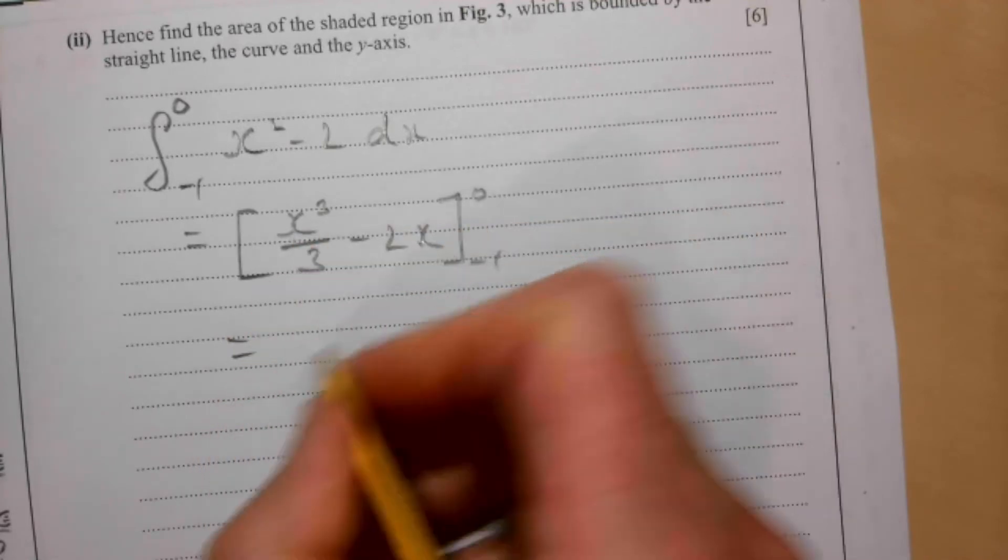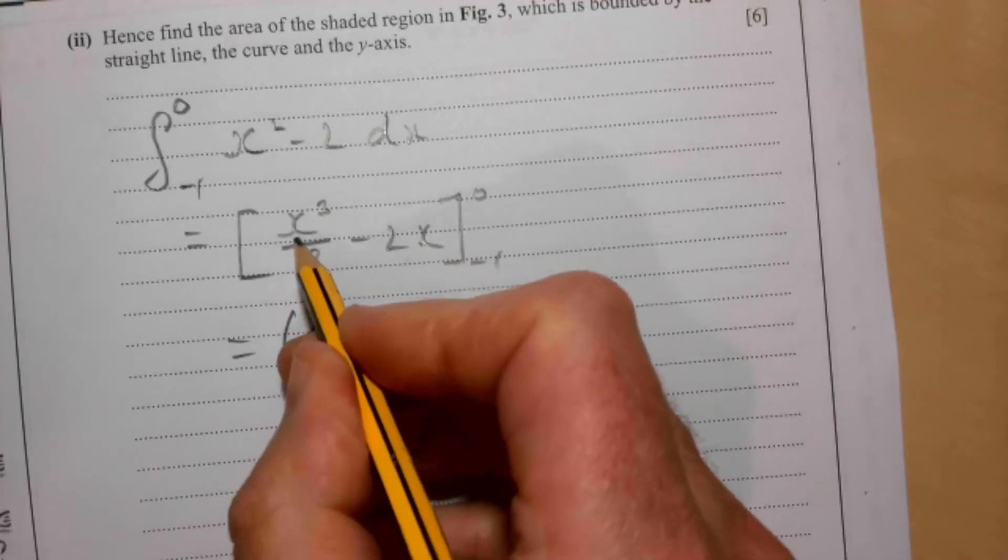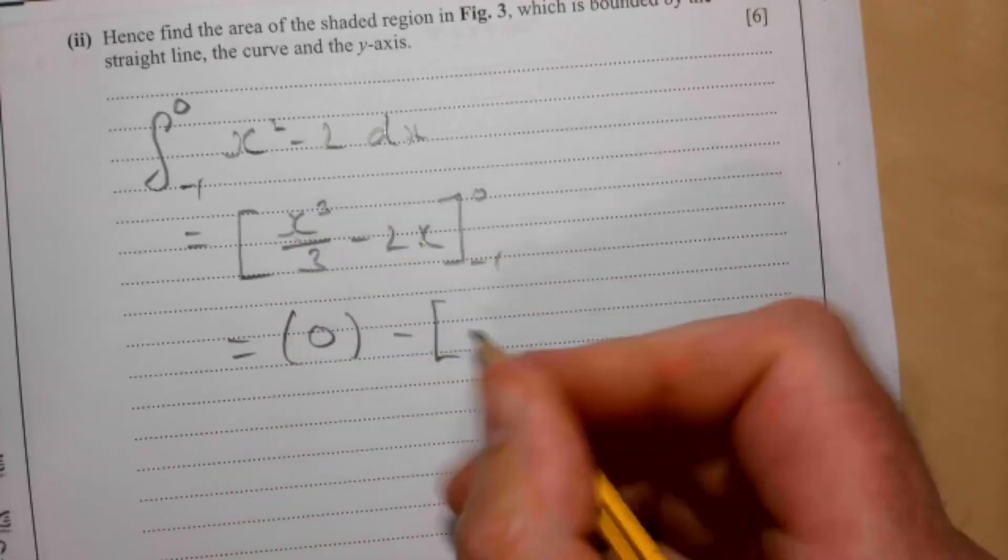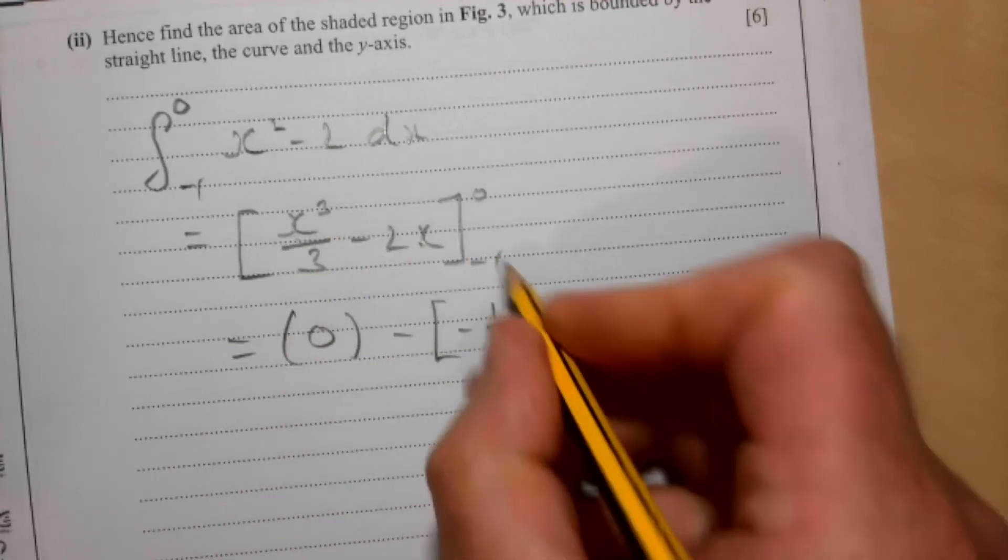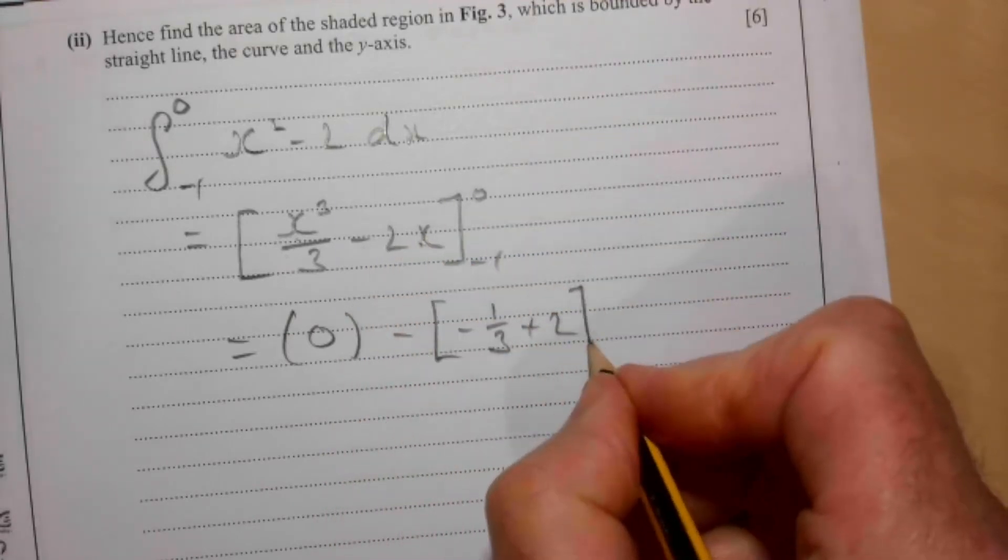Sub in 0, obviously you get 0, sub in minus 1. Minus 1 cubed gives me minus 1, so that's minus 1 third, and then minus 2 times minus 1 is plus 2.